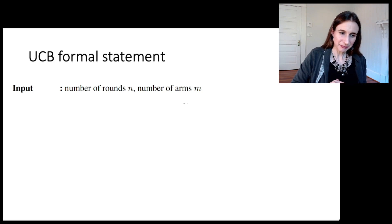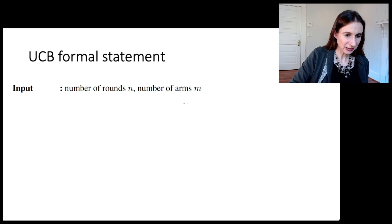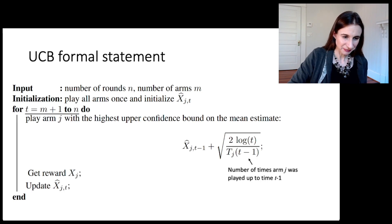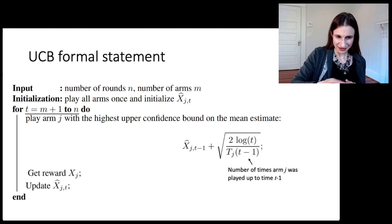So let me give you the formal statement for UCB. The input is the number of rounds N, the number of arms M. We play all arms once and initialize the mean rewards. Now for the remainder of the time, you play the arm with the highest upper confidence bound on the mean estimate.